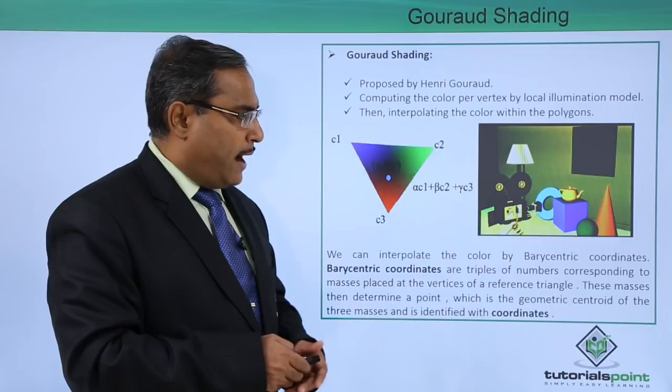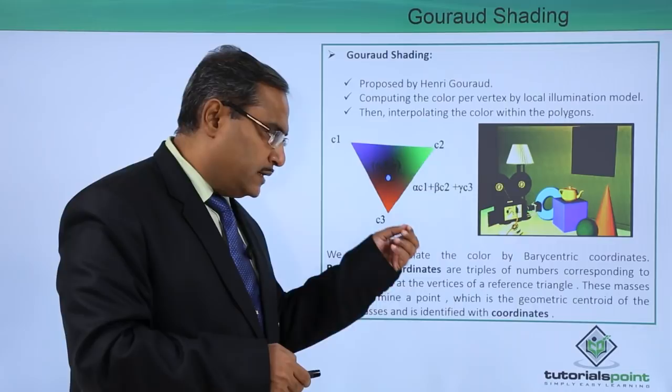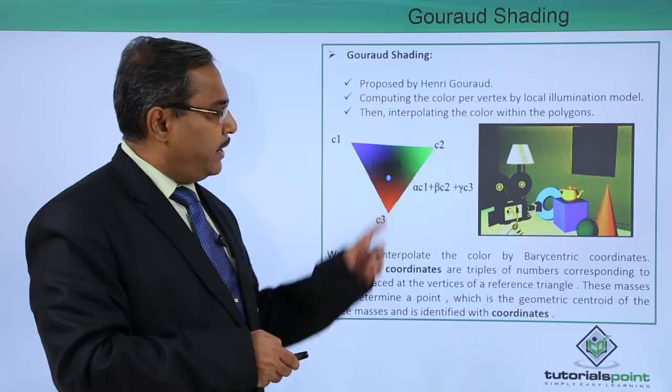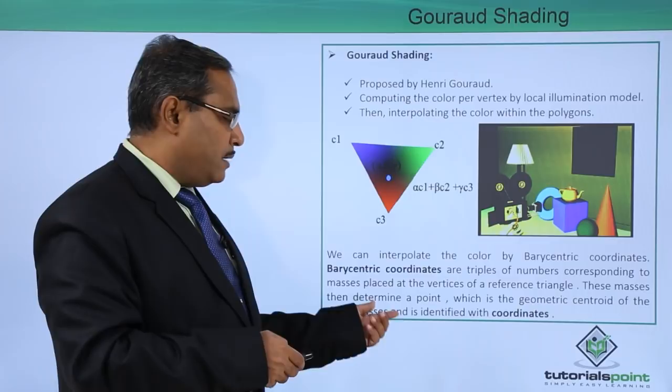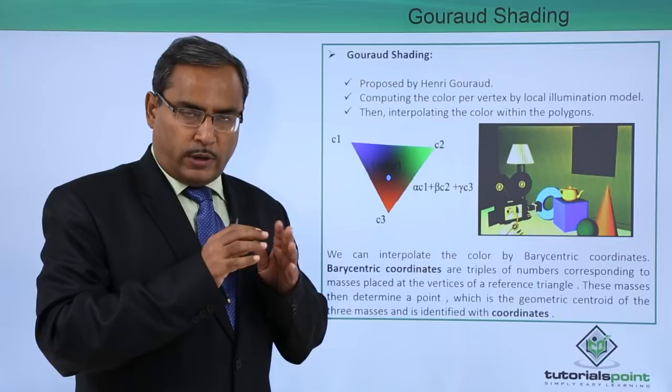Barycentric coordinates are triples of numbers corresponding to masses placed at the vertices of a reference triangle. These masses determine a point which is the geometric centroid of the three masses, identified with those coordinates. You can consider this triangle as a reference triangle.